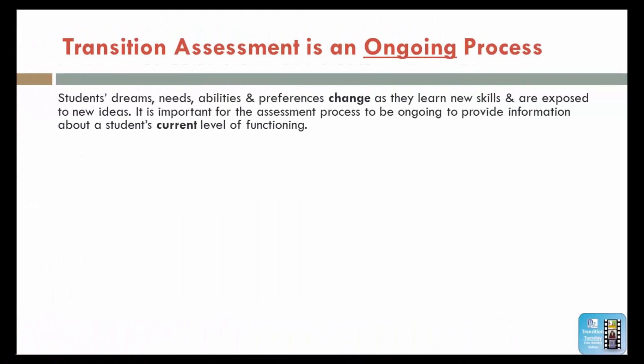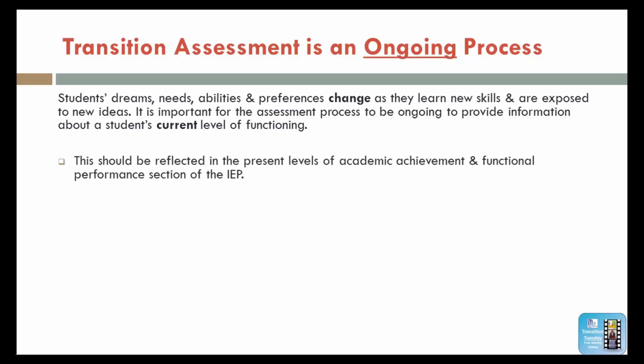Students' dreams, needs, abilities, and preferences change as they learn new skills and are exposed to new ideas. It's important for the assessment process to be ongoing to provide information about the student's current level of functioning. This should be reflected in the present levels of the Academic Achievement and Functional Performance section of the IEP.